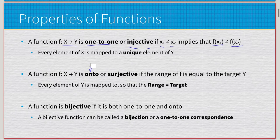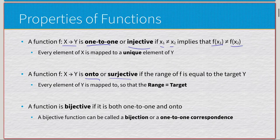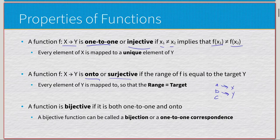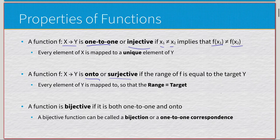Moving on, a function f from x to y is onto, or surjective, if the range of f equals the target y — meaning every element of y is mapped to. For example, with {a, b, c} mapping to {x, y}: if a maps to x, b maps to y, and c maps to x, then both x and y are mapped to, so the range equals the target.